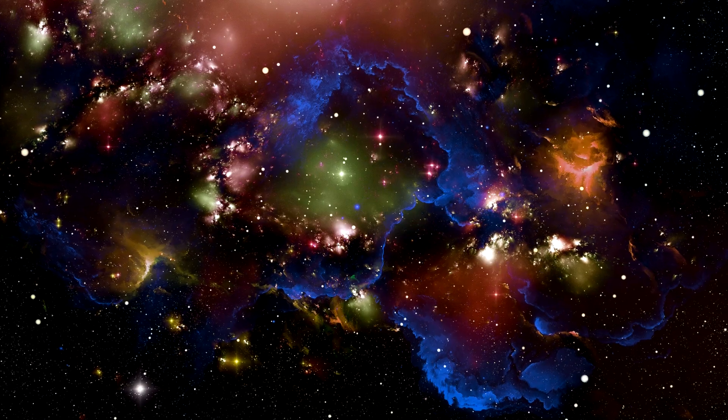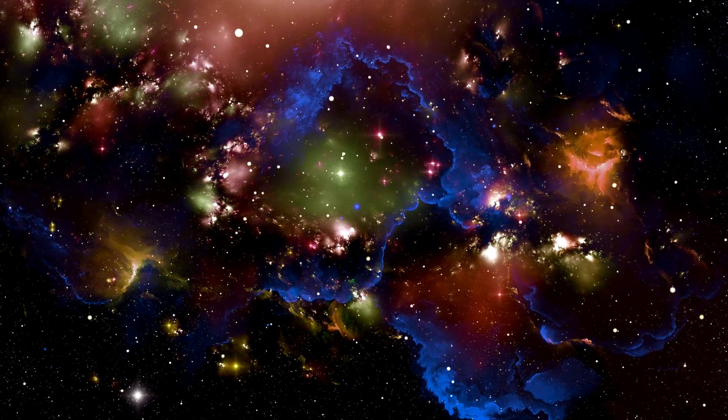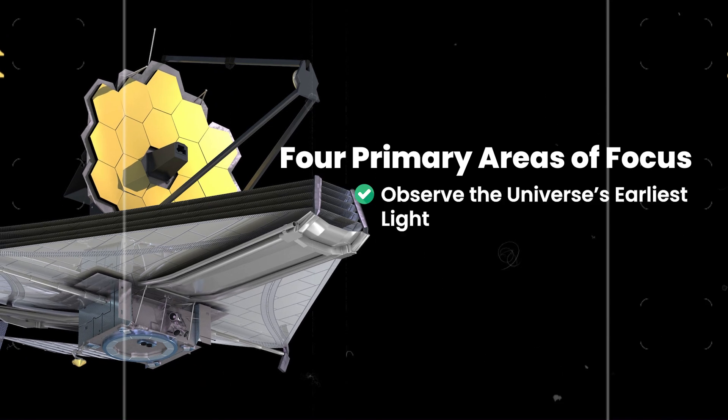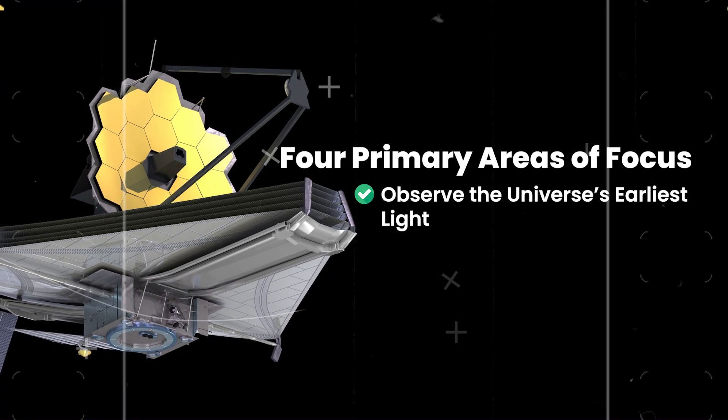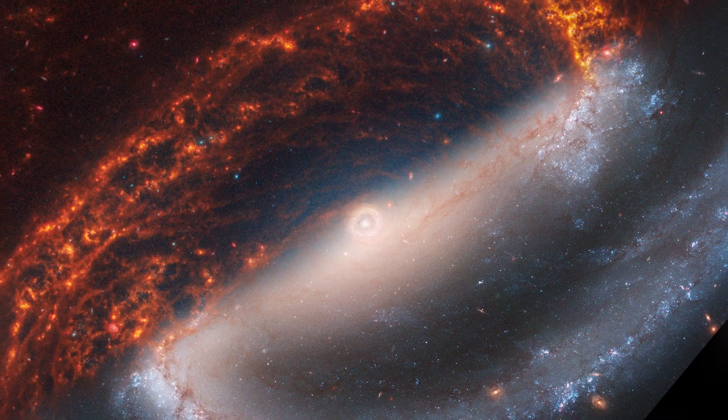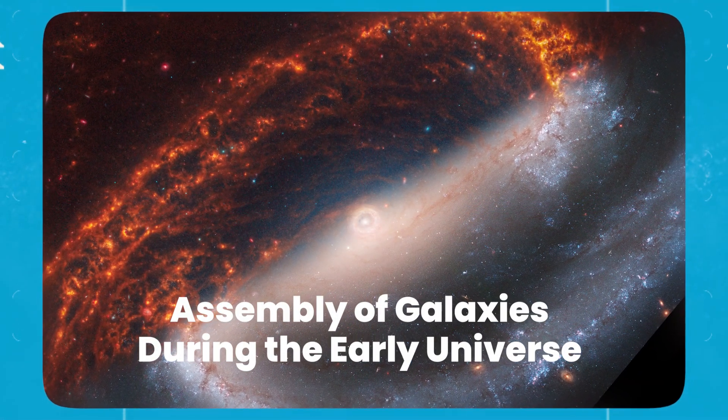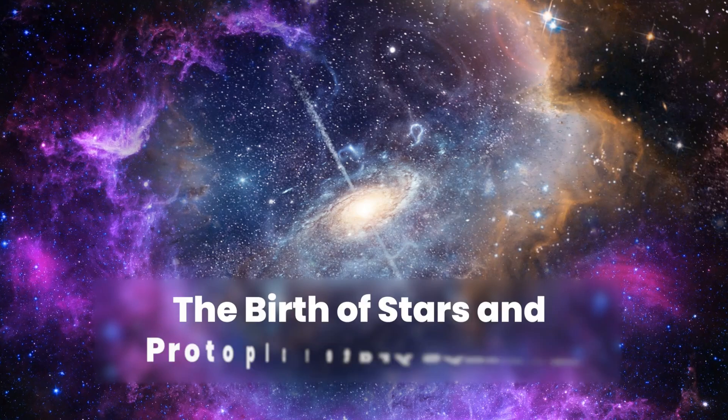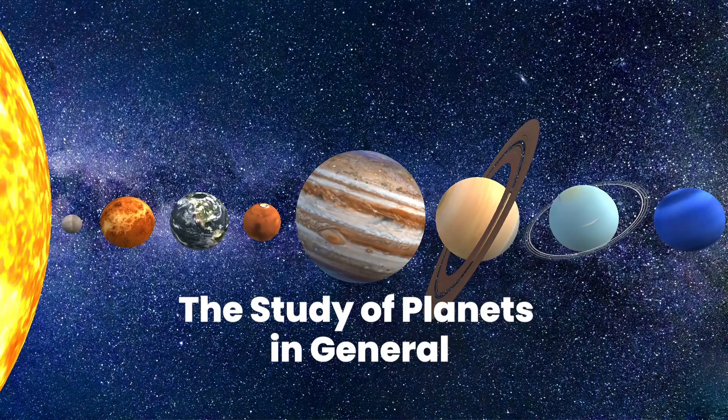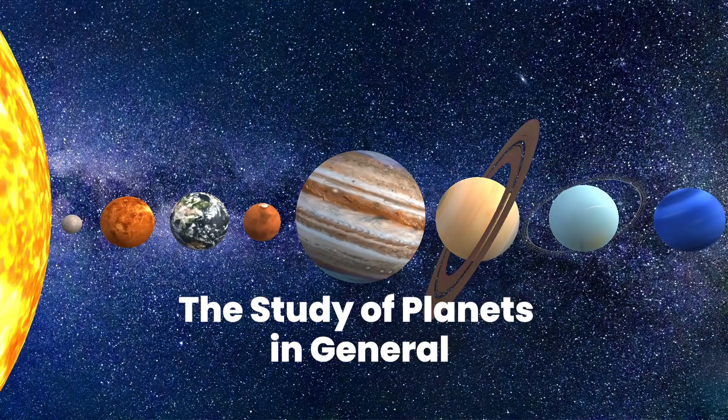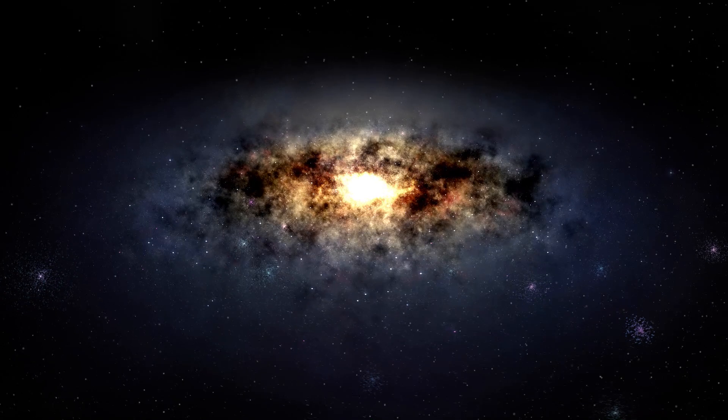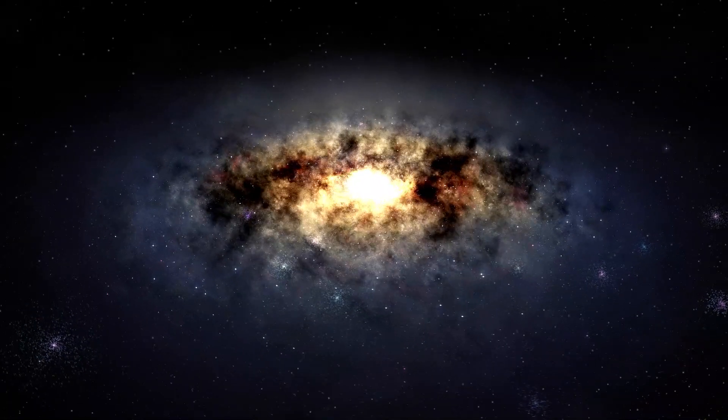As the James Webb Space Telescope embarked on its mission, NASA outlined four primary areas of focus. It aimed to observe the universe's earliest light, a pivotal moment in cosmic history. Additionally, the telescope would investigate the assembly of galaxies during the early universe, the birth of stars and protoplanetary systems, and the study of planets in general, including the origins of life. These areas are essential for space exploration but have posed challenges due to the difficulty of peering into space and conducting detailed research.